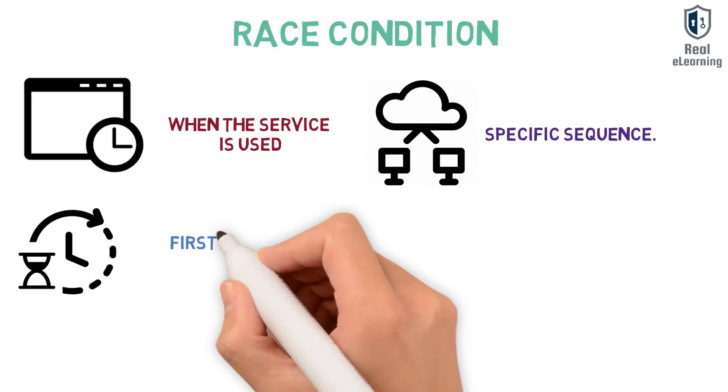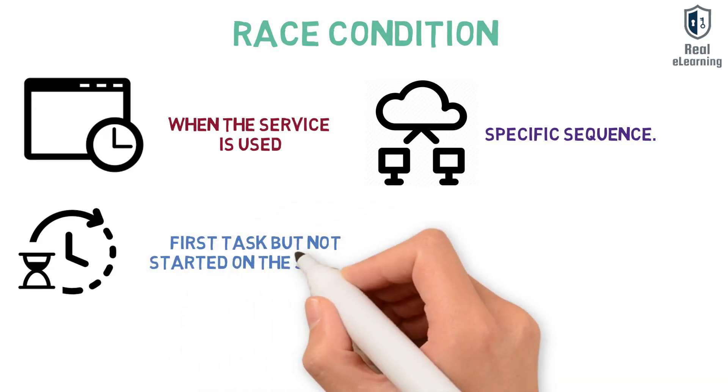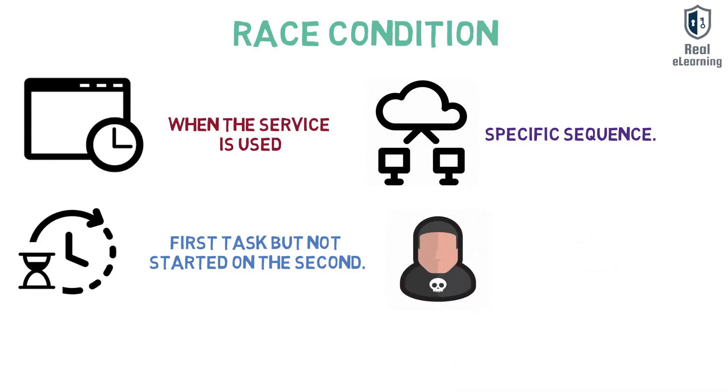If this period is long enough, or the attacker is lucky and knowledgeable, a race condition vulnerability exists where the attacker can trick the system into carrying out unauthorized actions in addition to its normal processes.